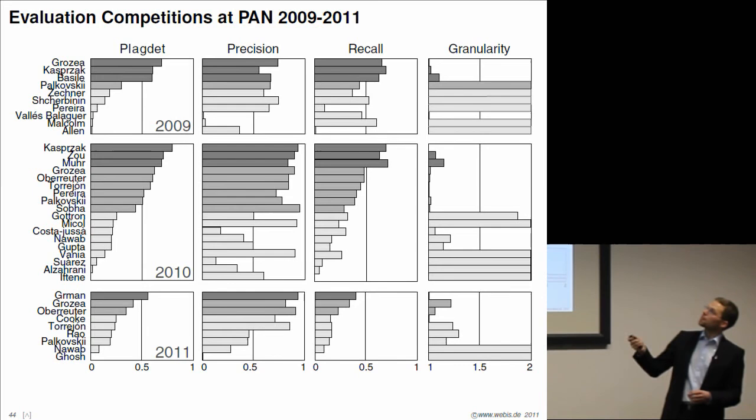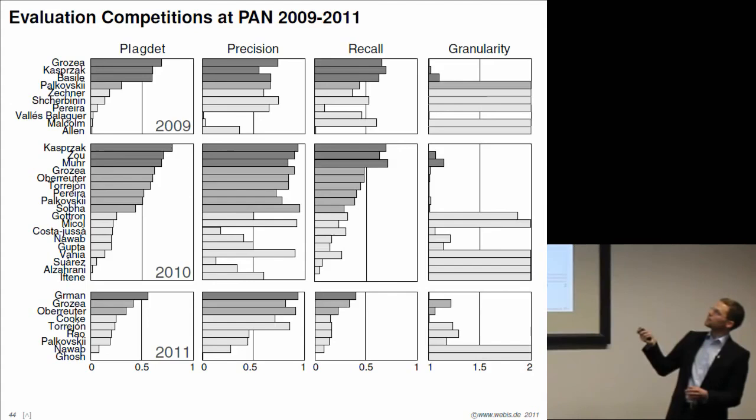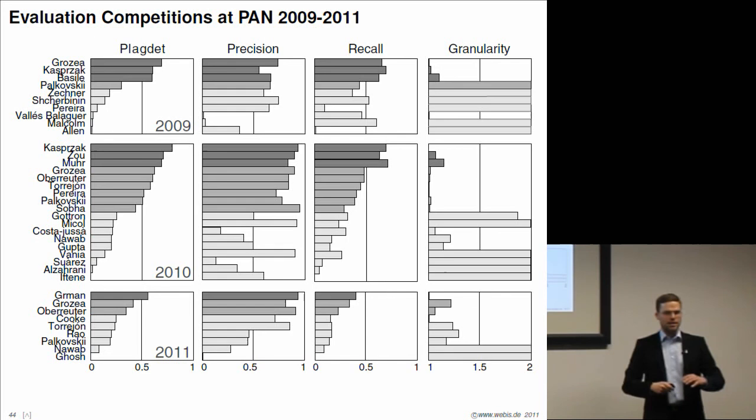We had many participants over the time. More than 30 have took part, and sometimes some of the participants more than once. These are the results we got for the four measures. As you can see, there are some who perform good, some who perform bad. This is to be expected. Most importantly, the newly introduced measure granularity. In the first year, nobody cared about it, apparently. Only the top three participants who then ended up with very good scores. But in the second and third year, people spent a lot more time getting the granularity down to a value close to one. This concludes this part of the talk.